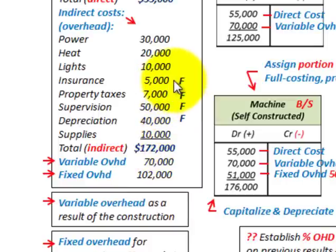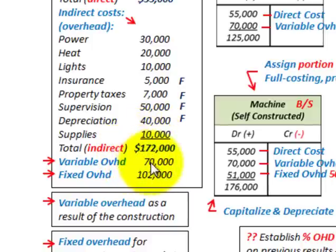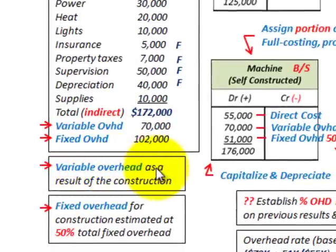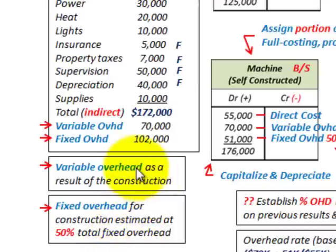The fixed overhead costs, or indirect costs, include insurance, property taxes, supervision, and depreciation. We have to separate out our variable overhead costs — that's the variable portion that varies for the period — from our fixed amount. Our variable overhead is $70,000 and our fixed overhead is $102,000. The fixed overhead for constructing the machine is estimated at 50% of this total fixed overhead of $102,000.